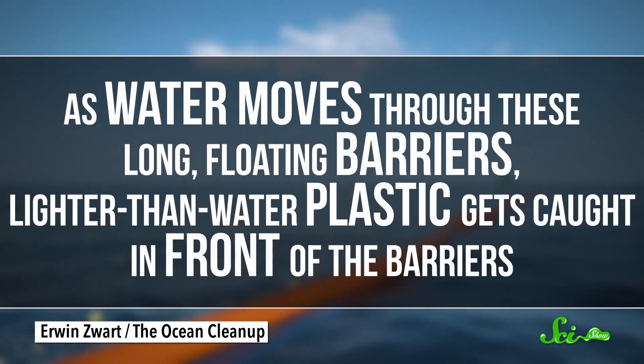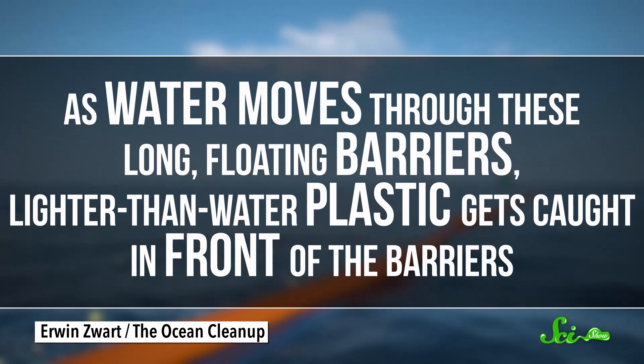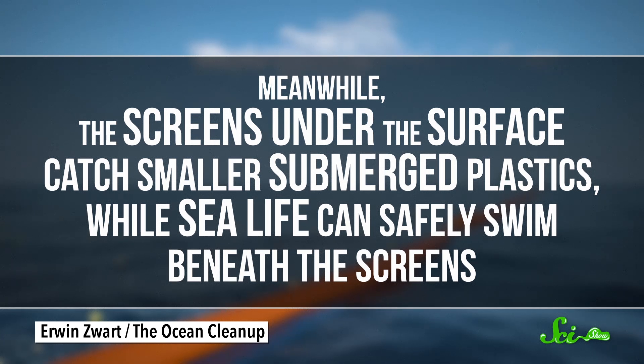As water moves through these long, floating barriers, lighter-than-water plastic gets caught in front of the barriers. Meanwhile, the screens under the surface catch smaller, submerged plastics, while sea life can safely swim beneath the screens. From there, plastics get funneled toward the center of the collector, where a central platform extracts, stores, and eventually recycles it back on land.